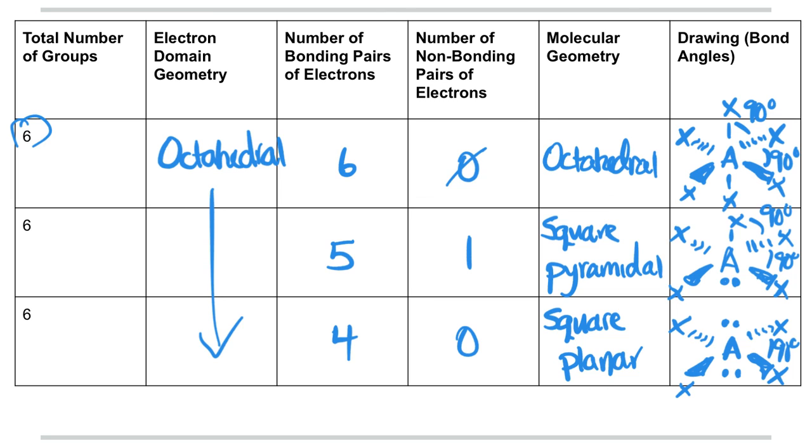So those are your shapes for five and six electron domain geometries. That's it for this video. We'll see you in the next one.